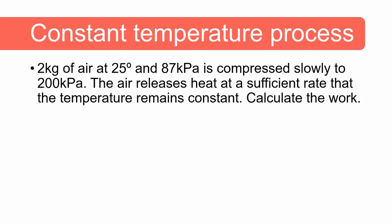Let's do an example problem for a constant temperature process. The problem states 2 kilograms of air at 25 degrees and 87 kilopascal is compressed slowly to 200 kilopascal. The air releases heat at a sufficient rate that the temperature remains constant. Calculate the work. You can pause this video and have a go at this problem yourself.